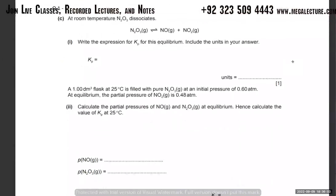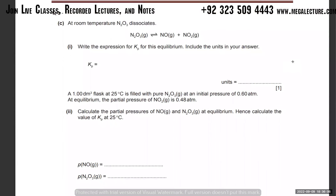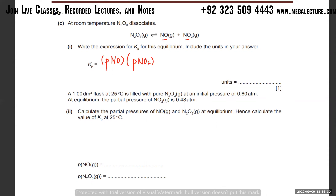We have a question on Kp. What is Kp? It's expressed in terms of partial pressures of products over reactants. So Kp = P(NO) × P(NO₂) / P(N₂O₃). Using atmospheres, the unit will be atm.